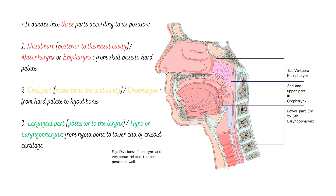The nasal part is also called the nasopharynx or epipharynx — posterior to the nasal cavity — and extends from the skull base to the hard palate. The oral part, also called the oropharynx, is posterior to the oral cavity and extends from the hard palate to the hyoid bone. The laryngeal part, or hypopharynx/laryngopharynx, is posterior to the larynx and extends from the hyoid bone to the lower end of the cricoid cartilage. We can see in the figure the division of the pharynx relative to the cervical vertebrae on the posterior wall.